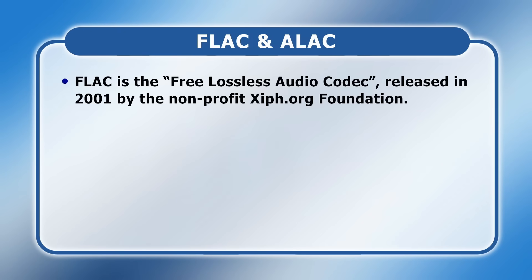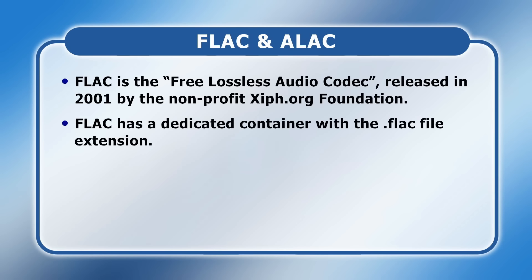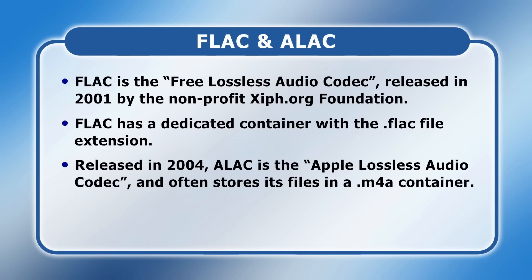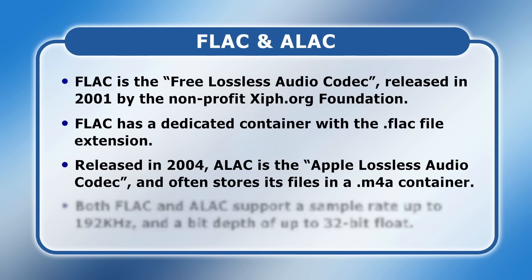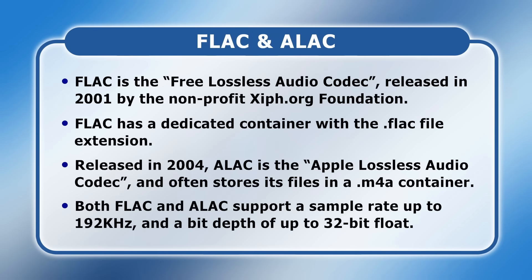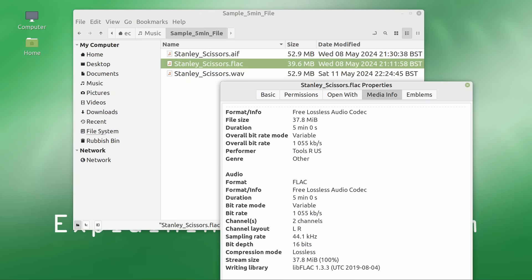The two dominant lossless compression formats are FLAC and ALAC. FLAC is the Free Lossless Audio Codec, released in 2001 by the non-profit Xiph.org Foundation. It is both an audio codec and has a dedicated container with the FLAC file extension. Released in 2004, ALAC is the Apple Lossless Audio Codec, and often stores its files in an M4A container. Both FLAC and ALAC support a sample rate up to 192 kHz and a bit depth of up to 32-bit floating point. File sizes may be up to 70% smaller than WAV or AIFF — our 5-minute 44.1 kHz 16-bit WAV file is reduced from 52.9 to 39.6 MB when saved in FLAC format.